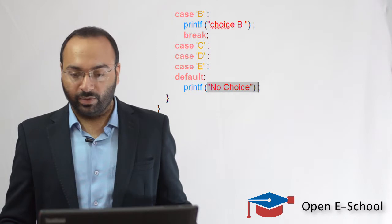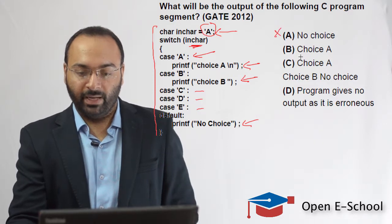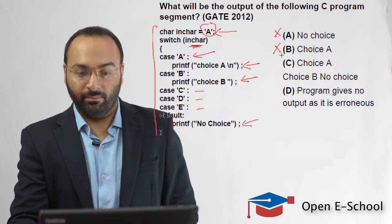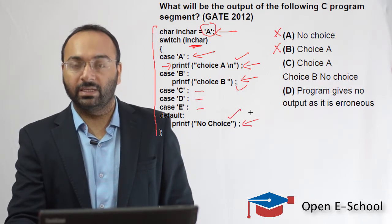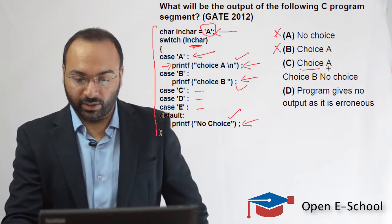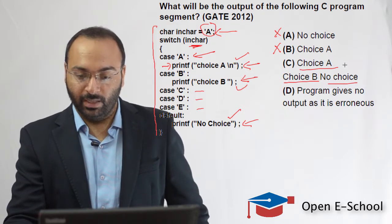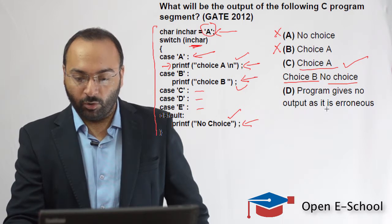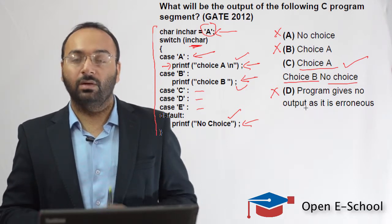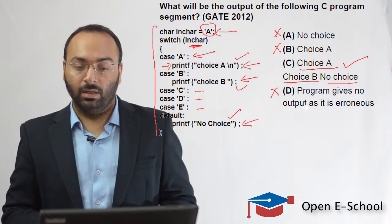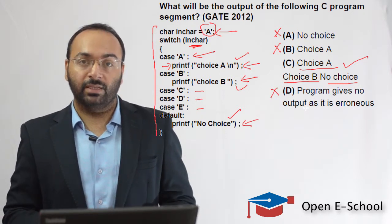With this understanding, let's look at the answer choices. Option A says 'no choice' will be printed — this is wrong. Option B says only 'choice A' will be printed — this is wrong because there is no break statement, so case B and the default case also run. Option C says the output is 'choice A' on the first line and 'choice B' and 'no choice' on the second line — this is exactly what we observed when executing the program, so C is the correct answer. Option D says the program gives no output and is erroneous — this is wrong because the program compiles and executes perfectly. We'll end this video here and continue with more GATE previous year questions in the next videos.